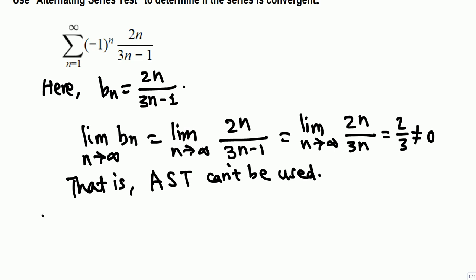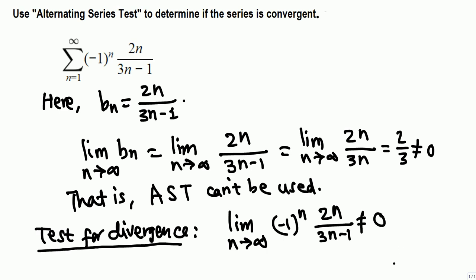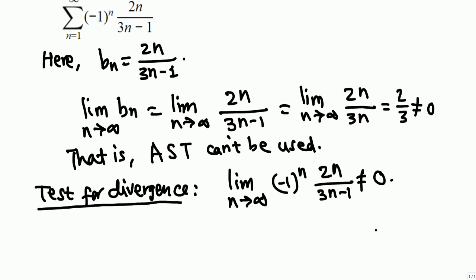Then we can use the test for divergence. That is, if a_n is not equal to 0 when n goes to infinity, that means the series diverges. So we take the limit of everything: (-1)^n times 2n over 3n minus 1. We know without (-1)^n this will be 2/3; with (-1)^n it will be either negative 2/3 or plus 2/3. In fact, the limit does not exist. In any case, this limit is not equal to 0, that means the series diverges.